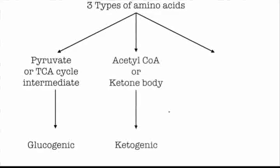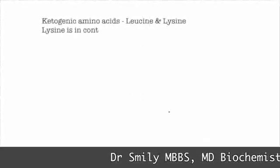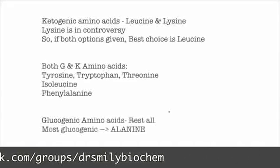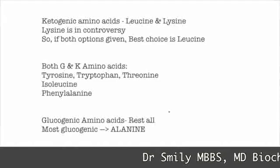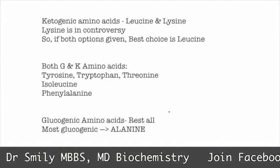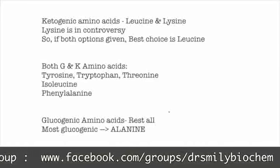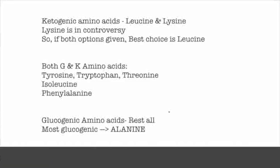Amino acids that give rise to pyruvate or TCA cycle intermediates are glucogenic. Those that form ketone bodies or acetyl-CoA are ketogenic. The amino acids in the ketogenic category are leucine and lysine — lysine is in controversy; if both options are given, best answer is leucine. Both category amino acids are tyrosine, tryptophan, threonine, isoleucine and phenylalanine. All amino acids starting with 'T' are in both category.